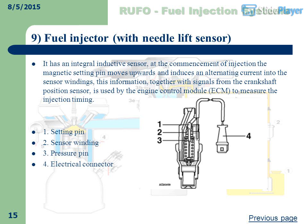Fuel Injector with Needle Lift Sensor: It has an integral inductive sensor. At the commencement of injection, the magnetic setting pin moves upwards and induces an alternating current into the sensor windings. This information, together with signals from the crankshaft position sensor, is used by the Engine Control Module (ECM) to measure the injection timing. Components: setting pin, sensor winding, pressure pin, and electrical connector.